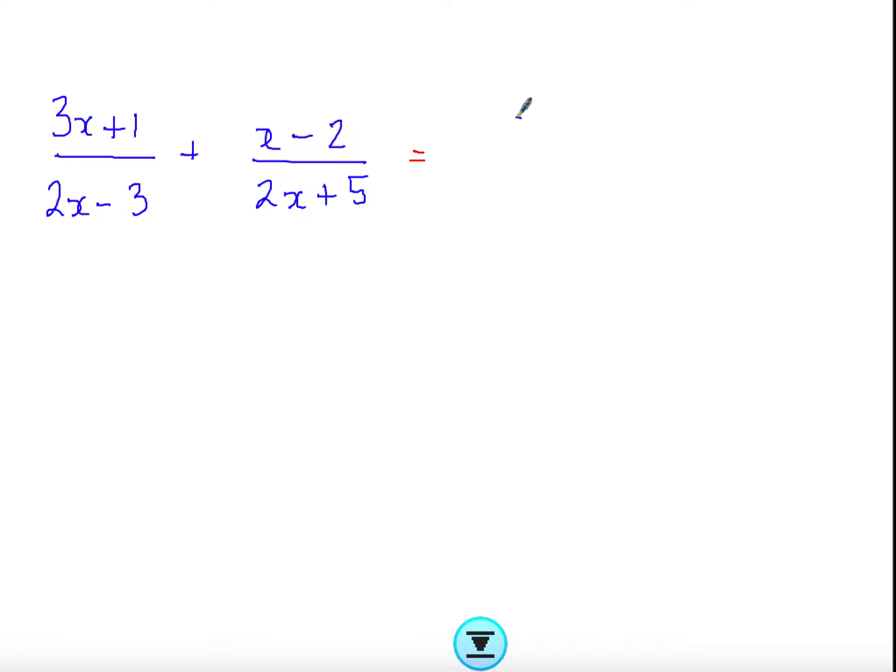I'll multiply the first fraction by the 2x plus 5, and the other one by 2x minus 3.